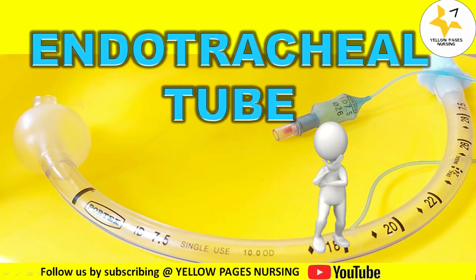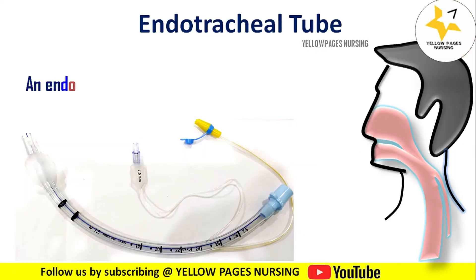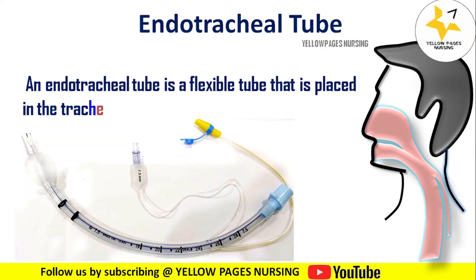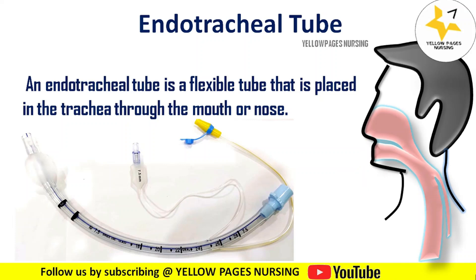An endotracheal tube is a flexible tube that is placed in the trachea through the mouth or nose for the primary purpose of establishing and maintaining a patent airway. The other end of the endotracheal tube is connected to a ventilator which controls the patient's breathing and delivers oxygen to the lungs. Endotracheal tubes are made of plastic, specifically polyvinyl chloride.